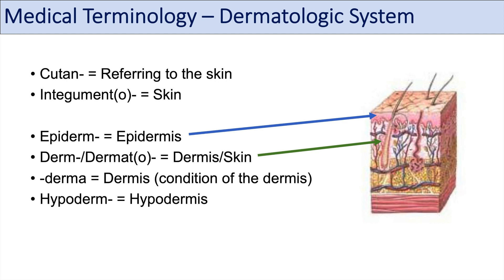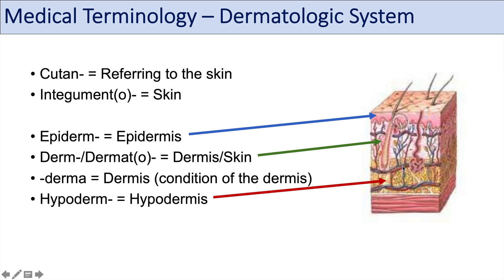We can also see hypoderm, which refers to the hypodermis — so below the dermis. If we break down this prefix: hypo means below or less than, and derm refers to the dermis or the skin. So hypodermis refers to the area below the dermis.